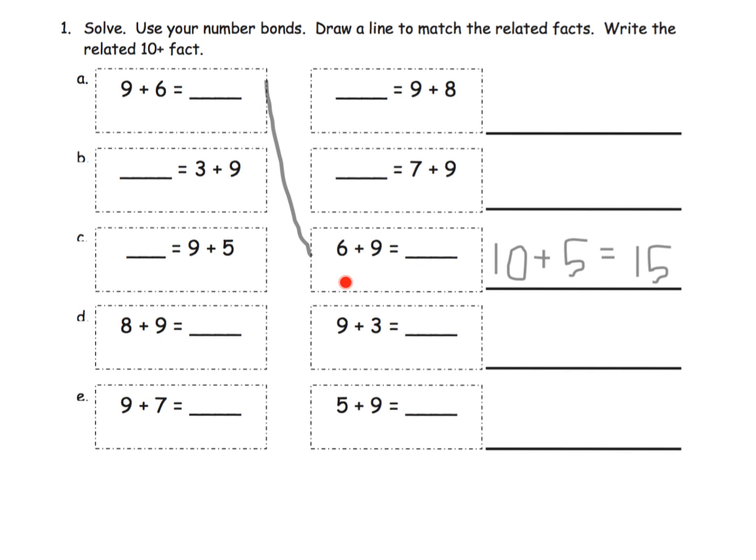We want students to start being a little bit more efficient in immediately recognizing that 9 plus 6 or 6 plus 9 is going to give us the same answer as 10 plus 5. That's our related 10 plus fact, and we get the answer of 15. For example, we've got 3 plus 9, which goes with 9 plus 3.